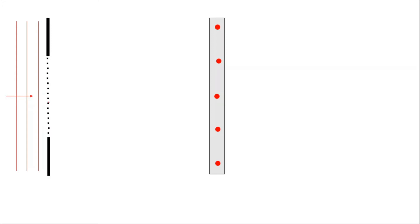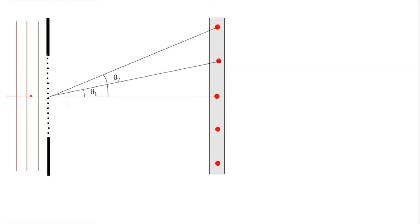Let's make a summary. Light is incident on the diffraction grating, and on the screen we have bright spots where light from the slits constructively interferes. The angle under which we observe the first bright point from the center is theta one, and the angle for the second bright point is theta two.